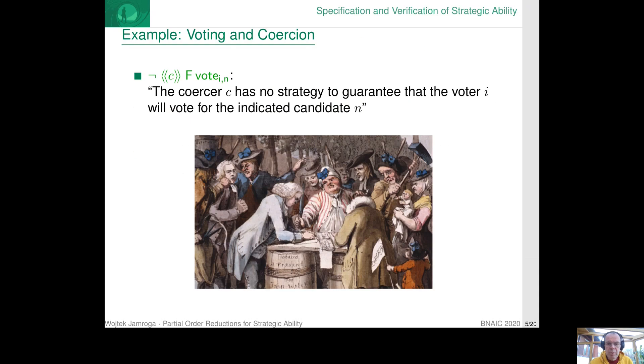To give you an example, let's consider a standard property of voting systems called coercion resistance. The idea is that even if there is an agent who wants to coerce or blackmail or force in some way a given voter to cast a vote for a given candidate, there should be no strategy for this potential coercer to achieve that goal.